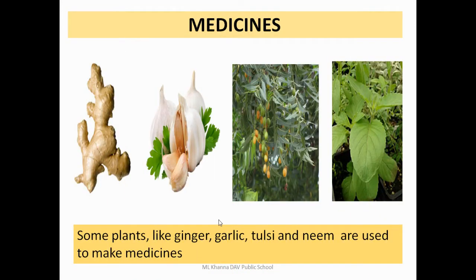We have already discussed spices in dried form. Now, garlic, ginger, mint, and tulsi are used in fresh form to make medicine. They help in digestion, help to cure our diseases, and make food healthy.